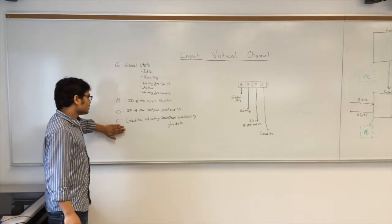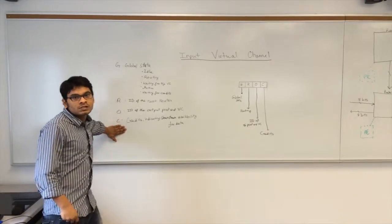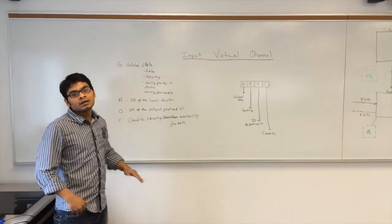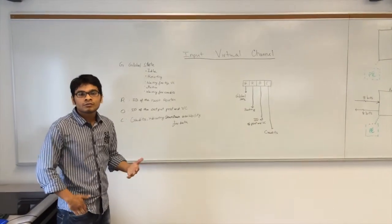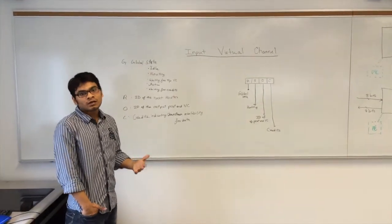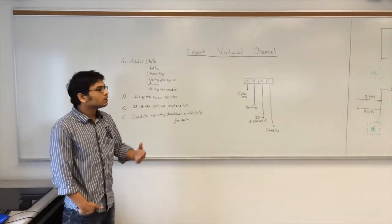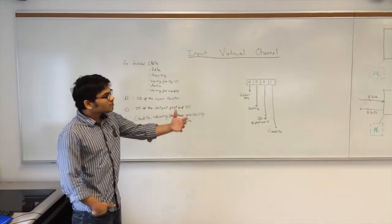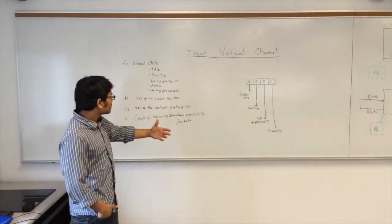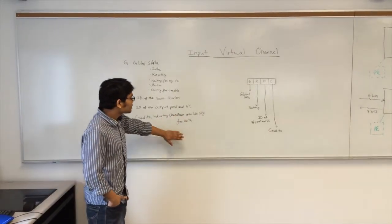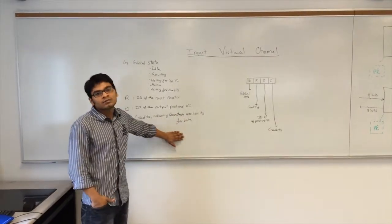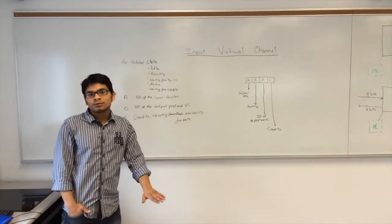the ID of that VC is stored in the O field of the state register. The C field — that is the credits field — indicates the number of buffers that are available at the downstream virtual channel that is allocated for this particular packet.